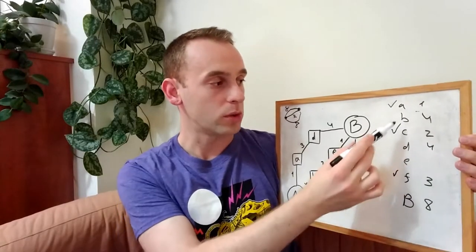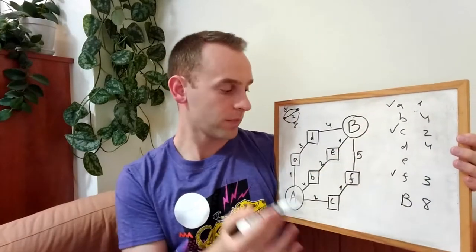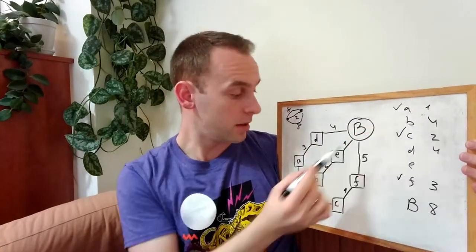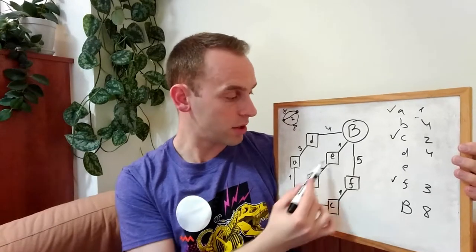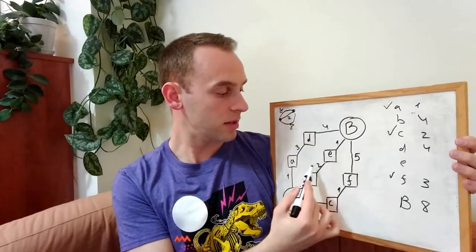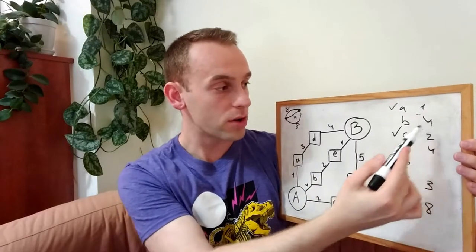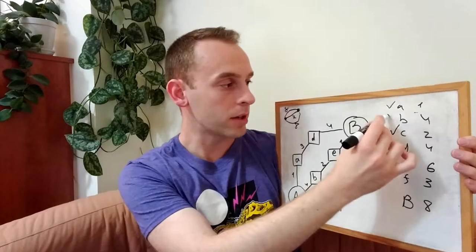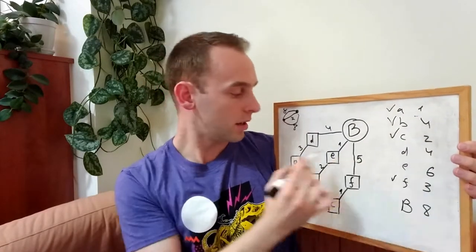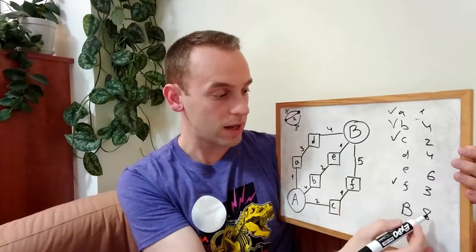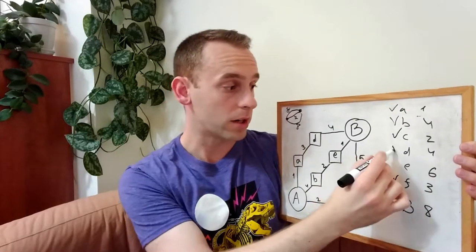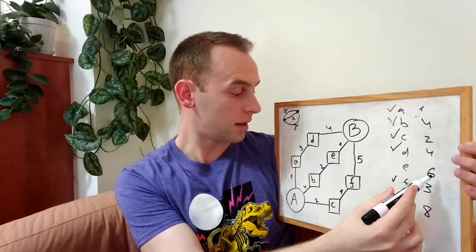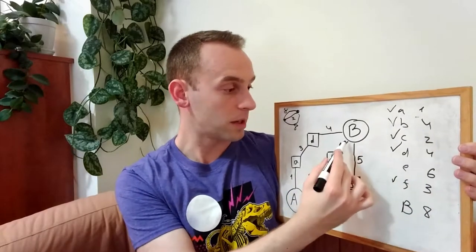So we handled F. Now we will take the minimum node, which can be either B or D. Let's take B. So we take B and we know that its neighbor is E, and the distance between B and E is 2, so 2 plus 4 is 6. And we'll mark the distance to E as 6, mark it as done. The next node is D. D to B is 4, 4 plus 4 is 8. We'll not update it. We'll mark it as done.